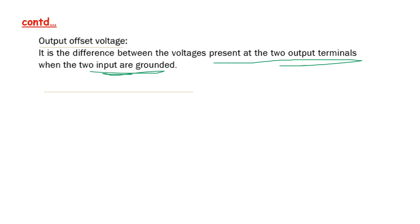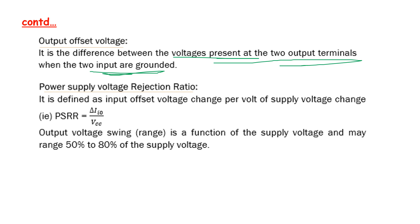The Power Supply Voltage Rejection Ratio, or PSRR, is another important parameter. PSRR = ΔV_offset / ΔVcc. It is defined as input offset voltage change per volt of supply voltage change. The output voltage swing is a function of supply voltage and may range from 50% to 80% of the supply voltage.